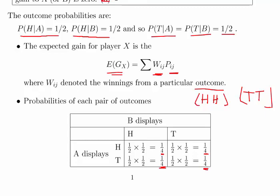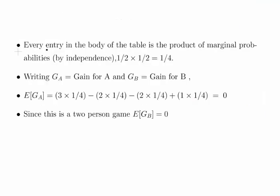So let's continue on. Every entry in the body of the table is the product of the marginal probability. So essentially it's a half, a half times a half, it's a quarter.